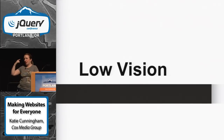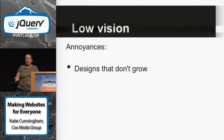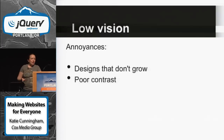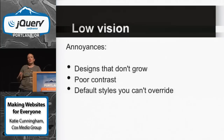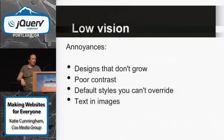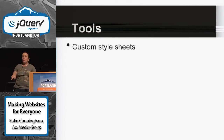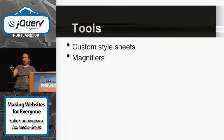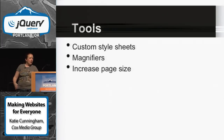Moving on to low vision — people who cannot have their vision corrected to 20/80, or people who left their glasses at home. Some of their annoyances: designs that don't grow when you hit Command+/- to make sites bigger; poor contrast, because good contrast helps quite a bit when you have visual issues; default styles you can't override — some try to switch black text on white background; and text in images. Some tools include custom style sheets to set font sizes and magnifiers. On Mac and Windows there are built-in magnifiers that follow the cursor and enlarge the page.